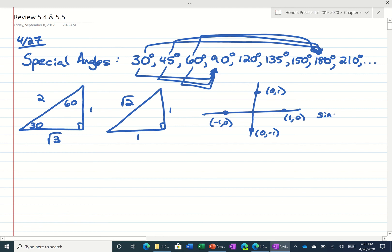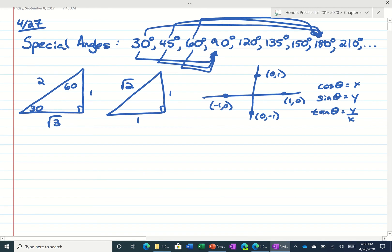We said that sine of theta was the y value, cosine of theta was the x value, and tangent of a quadrantal was sine over cosine. So in order to do some of these problems on your sheet, you're going to have to know three different things.